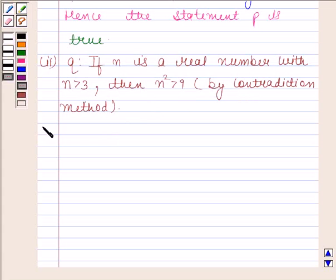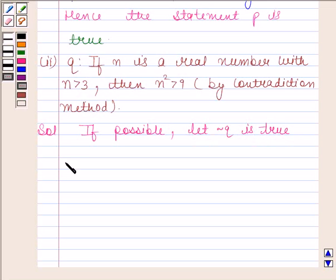Let's now begin with the solution. If possible, let negation of Q is true. That is, for n greater than 3, n squared is less than 9 where n belongs to R.